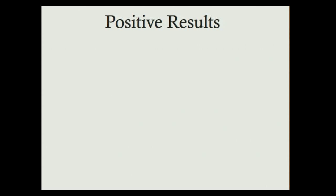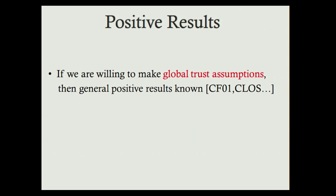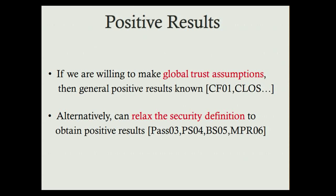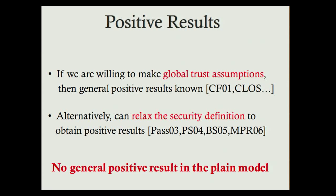What do we know about concurrent security? If you make global trust assumptions like the common random string, general positive results are known for concurrent security, even for some of the strongest notions like UC security. Alternatively, one can relax the security definition to bounded concurrency or super-polynomial time simulation, in which case there are positive results for a bunch of functionalities.